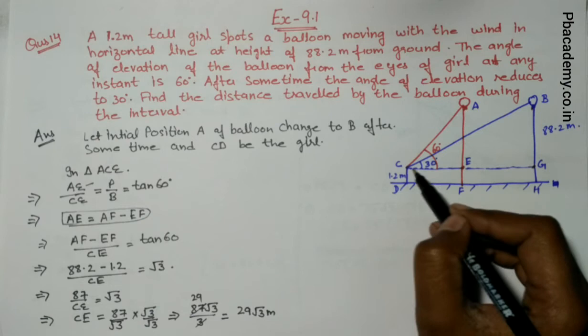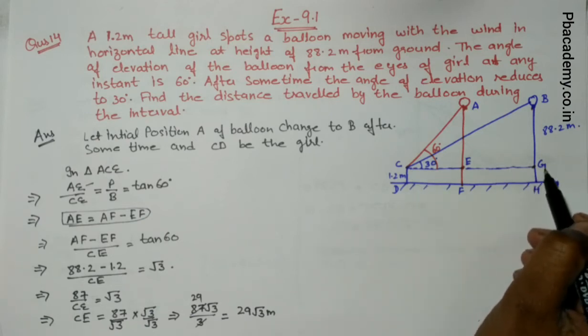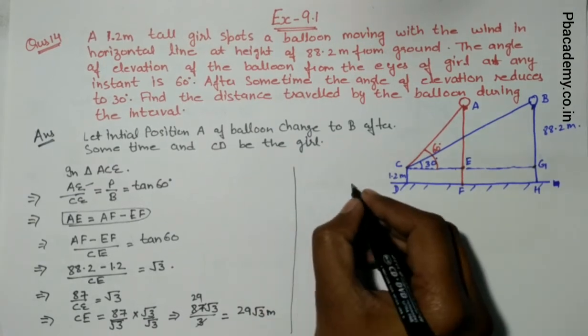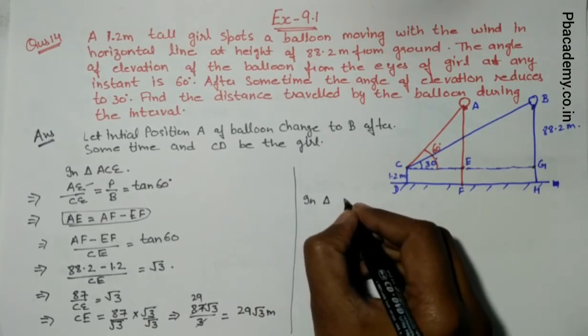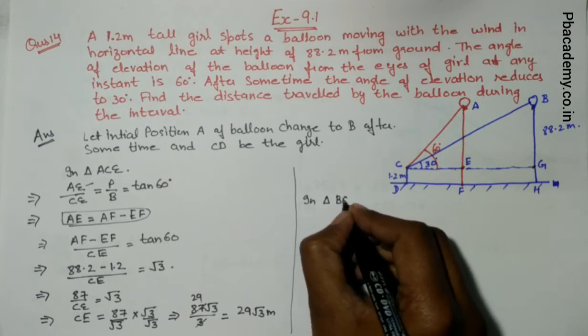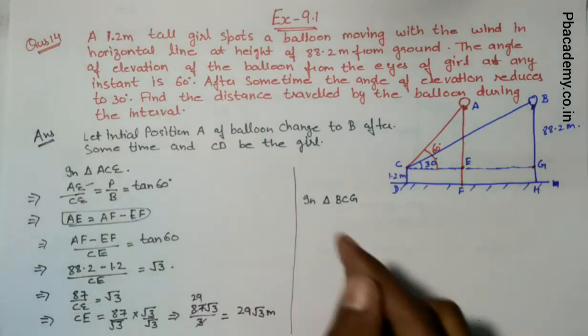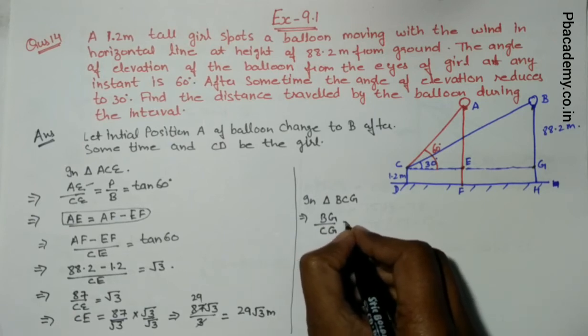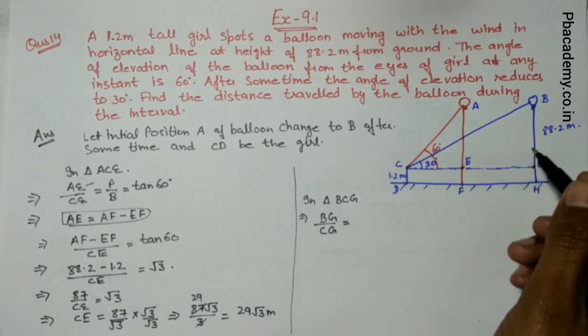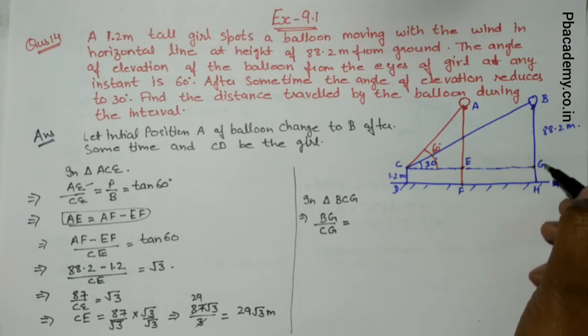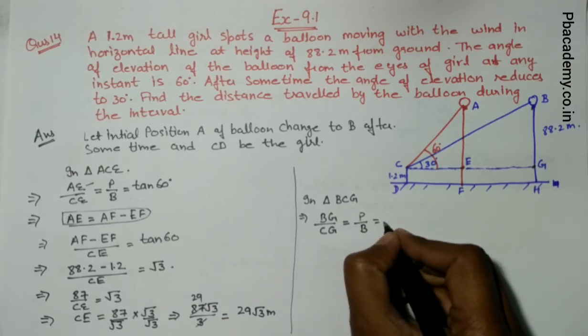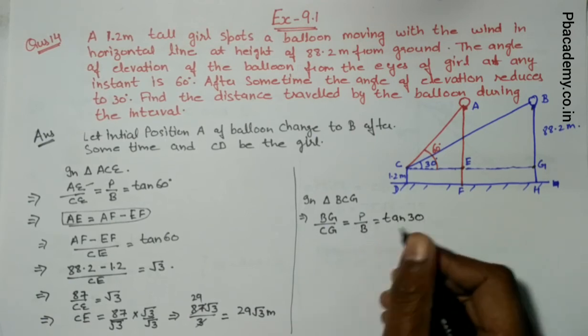Now in the bigger triangle, we will apply trigonometry to find GC value. GC minus CE will give the traveling distance. In triangle BCG, BG upon CG. BG can be written as BH. First we make the simple ratio: P upon B equals tan 30.